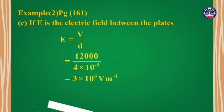The electric field E equals V divided by d, equals 2,000 divided by 4 times 10 to the power minus 3, equals 5 times 10 to the power 5 volts per meter.